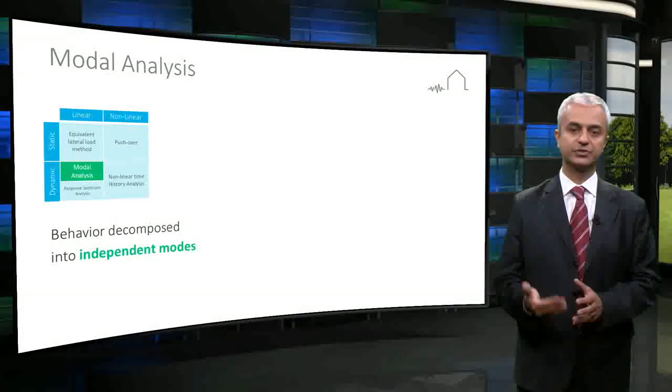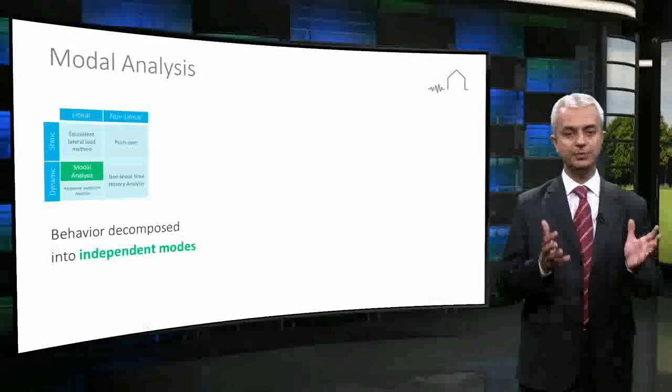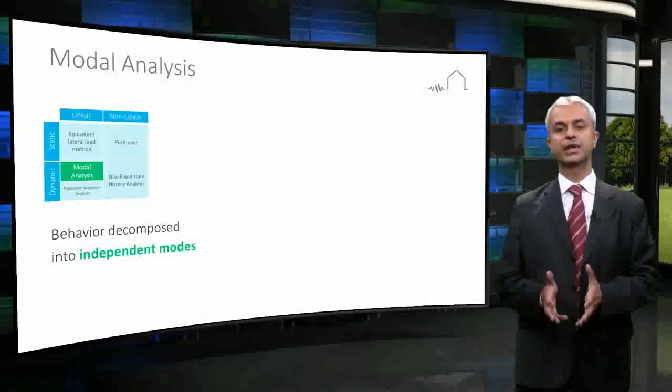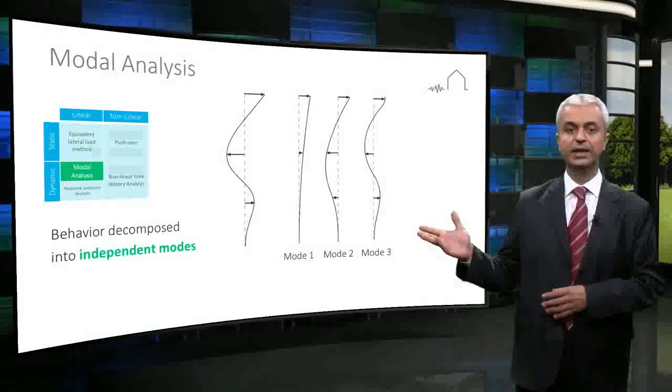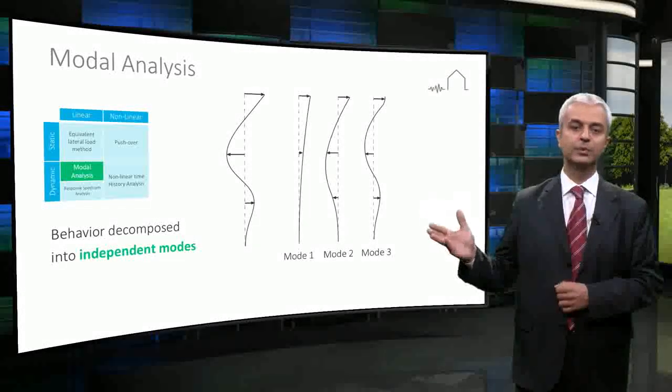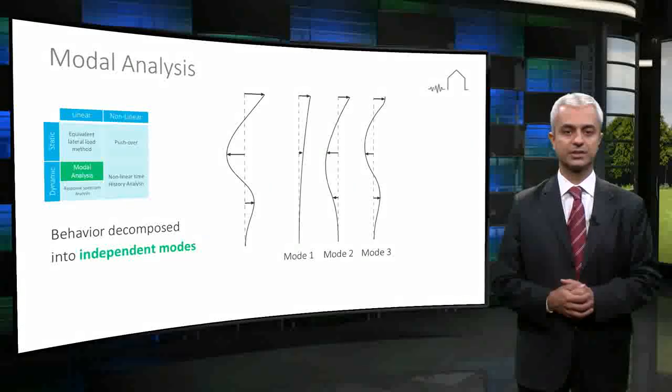Each degree of freedom of the structure has a separate mode shape. Each mode shape has a different contribution ratio from the total behavior of the structure. This graph illustrates how different mode shapes are separated from the total behavior of the structure.